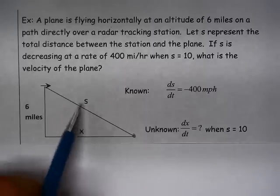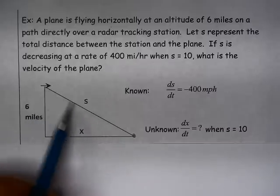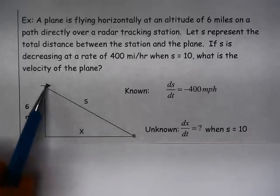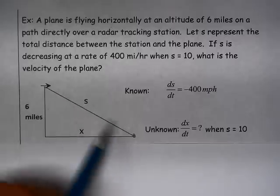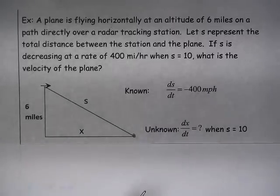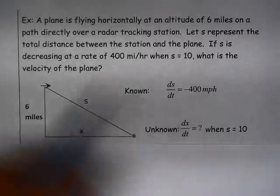And we're told that ds/dt, so this hypotenuse here, the distance between the station and the plane, is decreasing at 400 miles per hour. So ds/dt is negative 400. We're trying to find dx/dt when s equals 10.